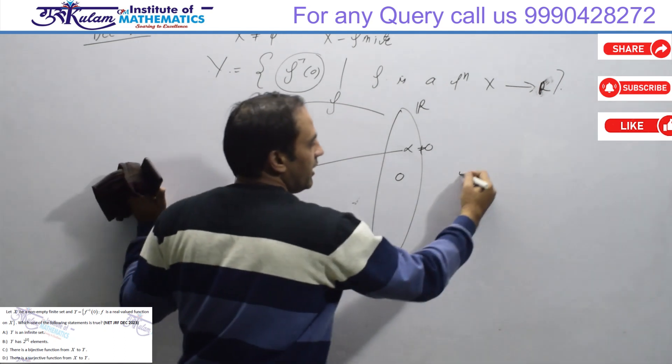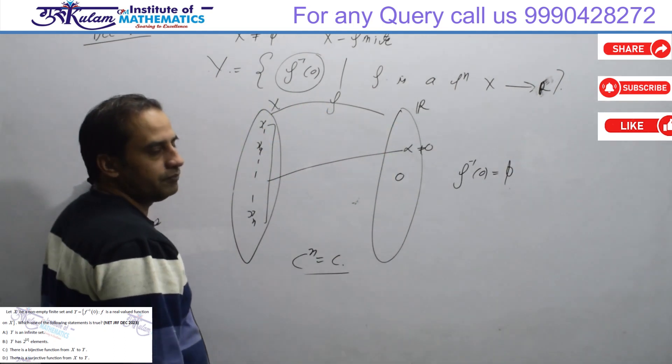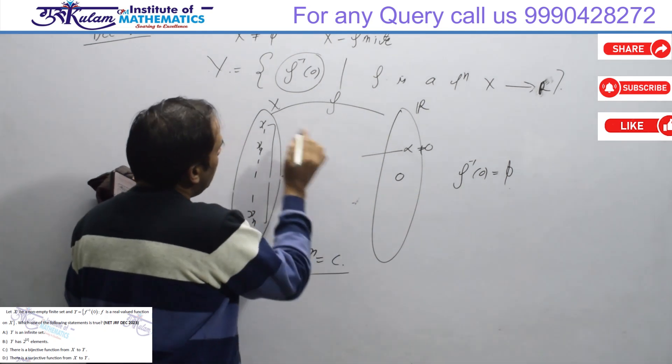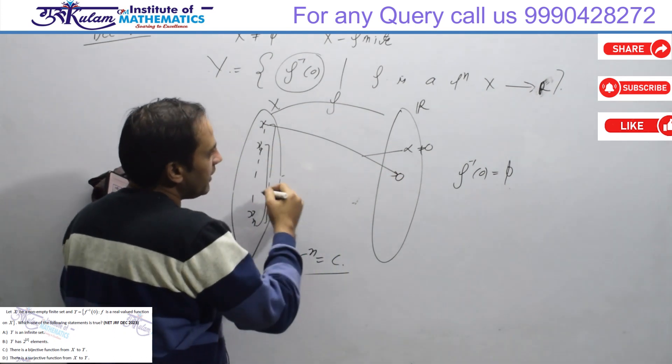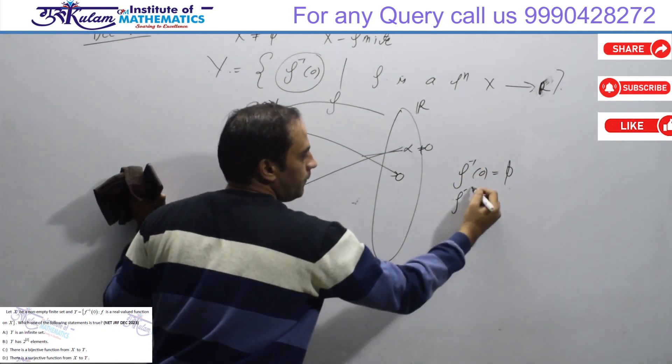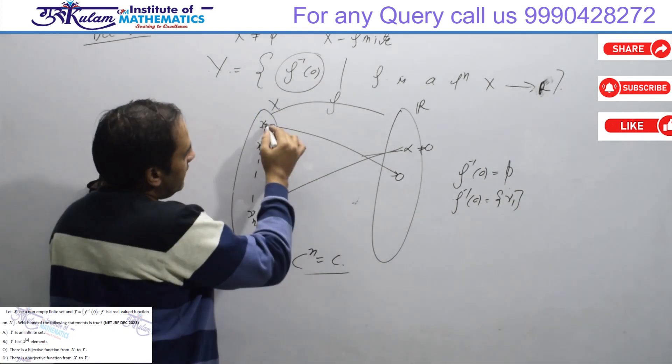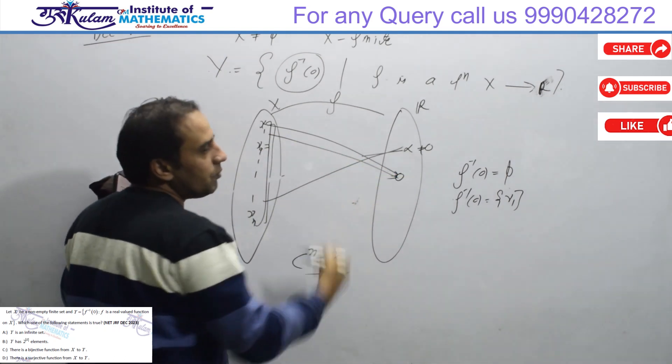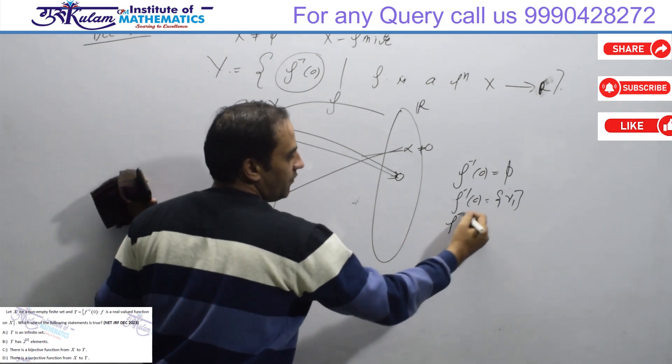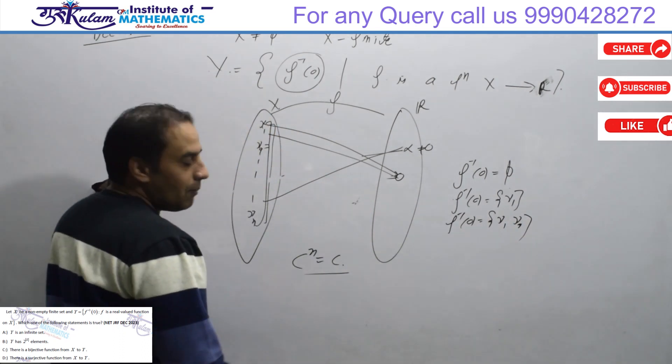Now some function maps everything to 0, then f inverse 0 is X. Second situation: x1 maps to 0 and the other elements map elsewhere. Then f inverse 0 is singleton x1. Third case: x1 and x2 map to 0, other elements map elsewhere. In this case, f inverse 0 will be x1 and x2.